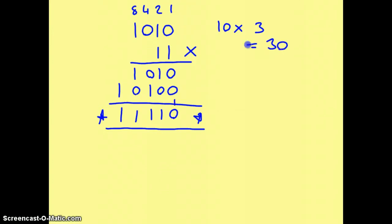So we can see here that this is 10 times 3, which is 30. And if we work the answer out, 1, 2, 4, 8, 16. 16 plus 8 gives us 24, plus the 4 gives us 28, plus the 2 gives us 30. So this shows that our multiplication has worked.